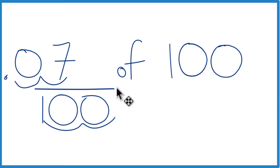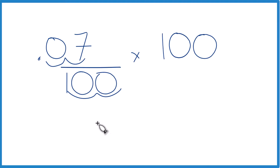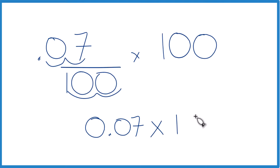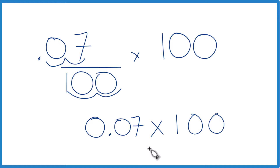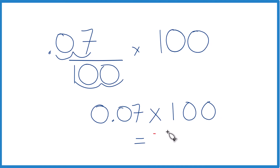Instead of 'of,' we're going to use multiplication here. So we have 0.07 times 100, and when we do that, 0.07 times 100 gives us 7, which is what we found before.